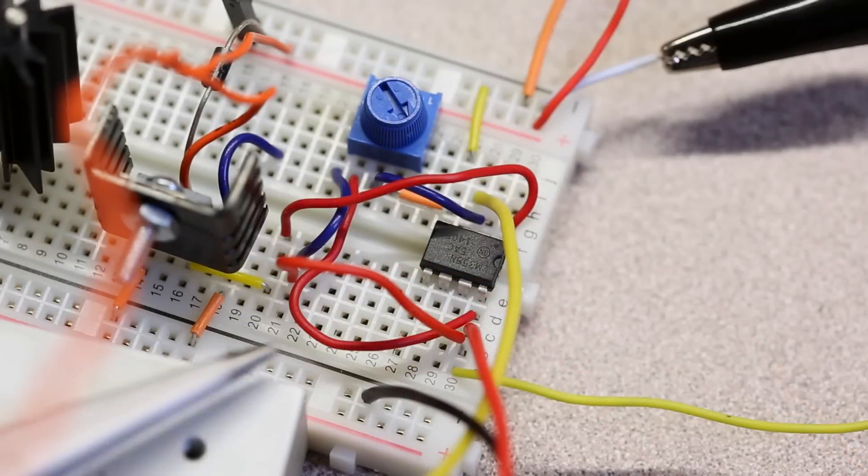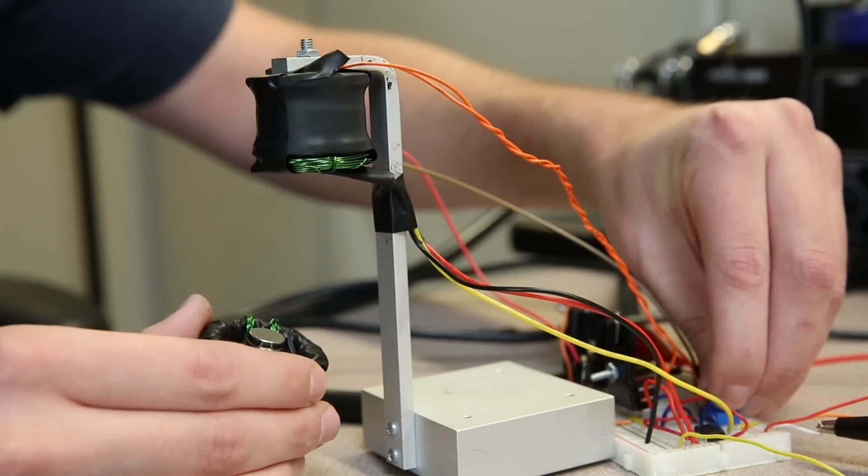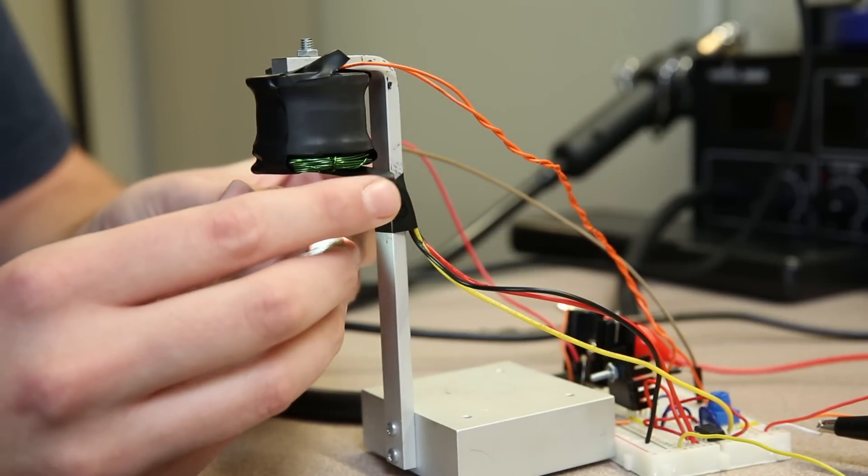I used a simple comparator circuit to control the power to the inductor based on the value of the Hall effect sensor and a pot to set the distance between the sensor and the magnets.